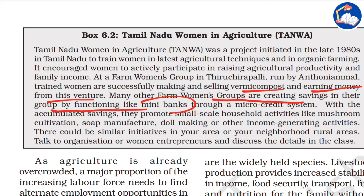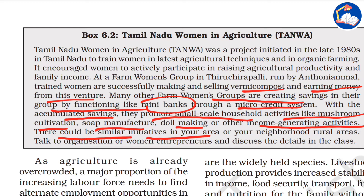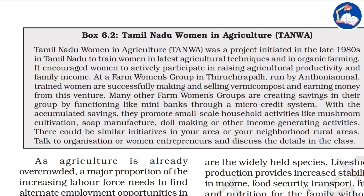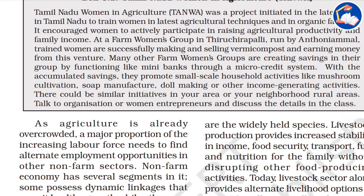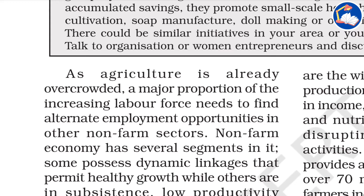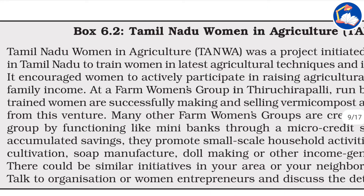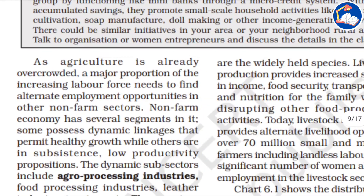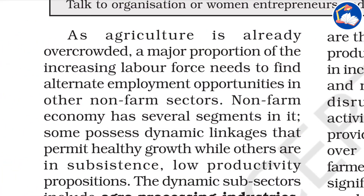Farm women's groups were successfully making and selling vermicompost and earning money. Many other farm women's groups were creating savings by functioning like mini banks through a micro-credit system. With accumulated savings, they promote small-scale household activities like mushroom cultivation, soap manufacture, doll making, and other income-generating activities. Examples like Kudumbashree and Tamil Nadu Women in Agriculture can be used as examples when writing essays or mains answers, as women's empowerment is an important topic in the syllabus.